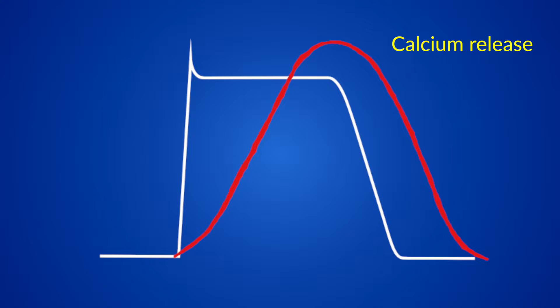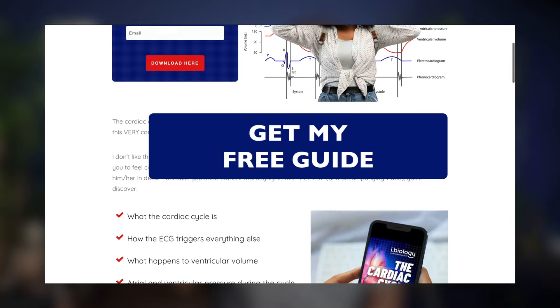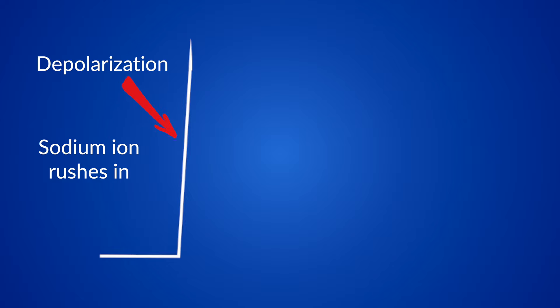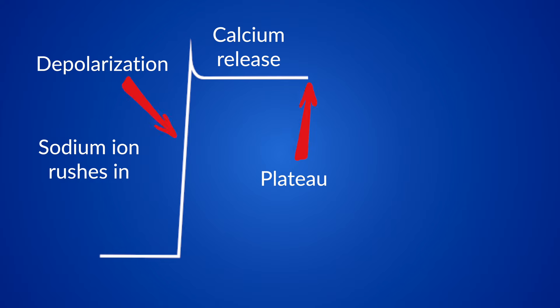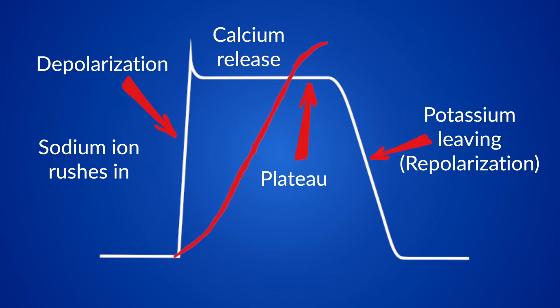The cardiac muscle contraction cycle is now complete and can start over again. To summarize: when the SA or AV node sends a signal, sodium ions rush into cardiac muscle cells causing depolarization. Then calcium is released from the sarcoplasmic reticulum, causing the plateau phase — during which calcium triggers the muscle cells to contract. Once calcium is pumped back in, the cell repolarizes and the muscle cells relax. Then the process repeats when another signal comes along. That's the action potential and contraction in cardiac muscle cells.